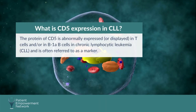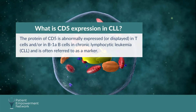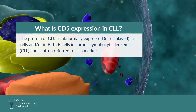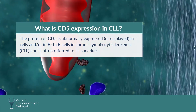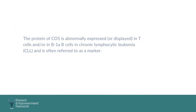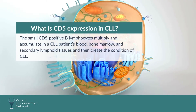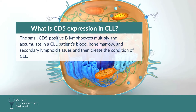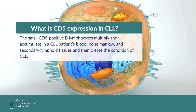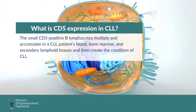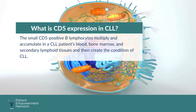The protein CD5 is abnormally expressed or displayed in T cells and/or in B1 cells in chronic lymphocytic leukemia and is often referred to as a marker. The small CD5-positive B lymphocytes multiply and accumulate in a CLL patient's blood, bone marrow, and secondary lymphoid tissues, and then create the condition of CLL.